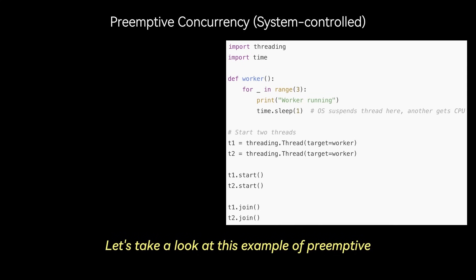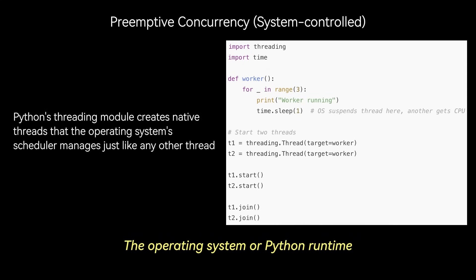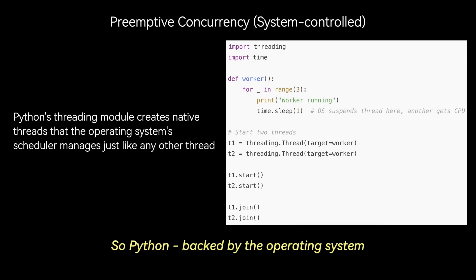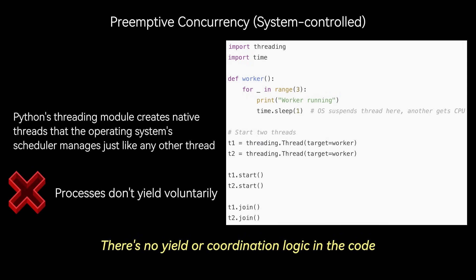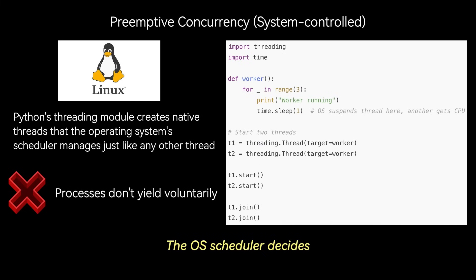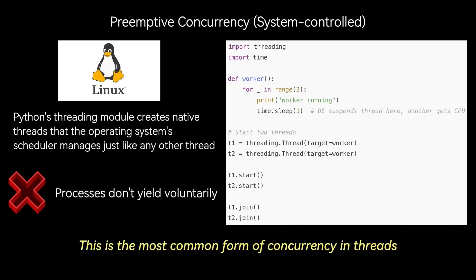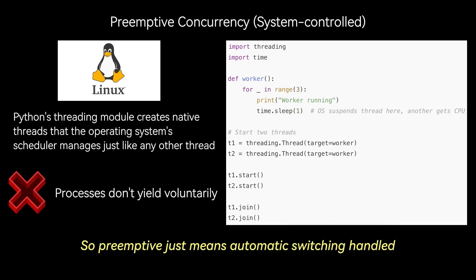Let's look at this example of preemptive concurrency, or system-controlled concurrency. The operating system, or Python runtime, decides when to switch tasks, typically using time slices. Python, backed by the operating system, automatically preempts threads. There's no yield or coordination logic in the code — the OS scheduler decides. This is the most common form of concurrency in threads. Preemptive just means automatic switching handled by the OS.